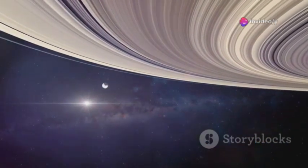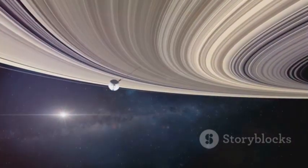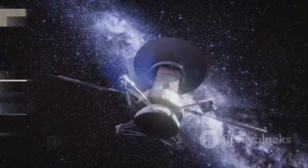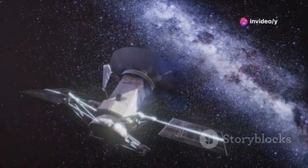From Jupiter, Voyager 2 swung toward Saturn, arriving in 1981, studying the planet's magnificent rings and mysterious moons. Each encounter was a treasure trove of discovery, rewriting our understanding of the solar system.